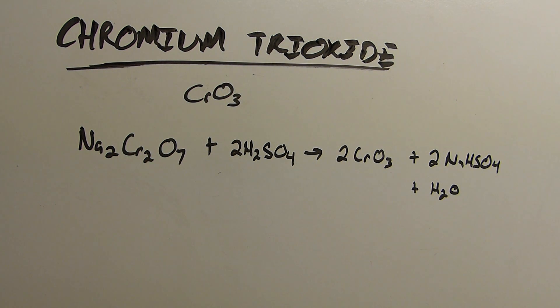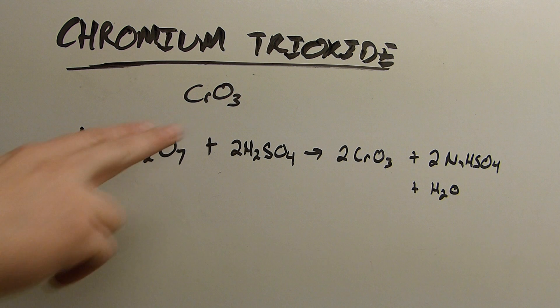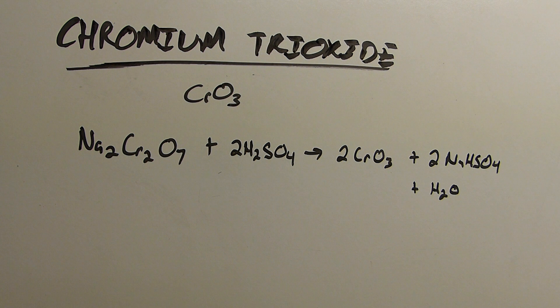In this video I'll be making a compound called chromium trioxide which has the formula CrO3. It's a strong oxidizer that's commonly used in organic chemistry in a complex of pyridine called pyridinium chlorochromate or PCC for short.